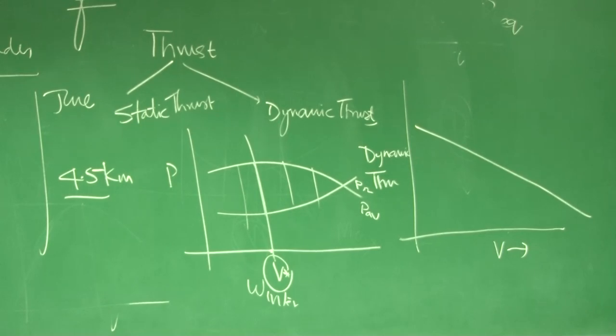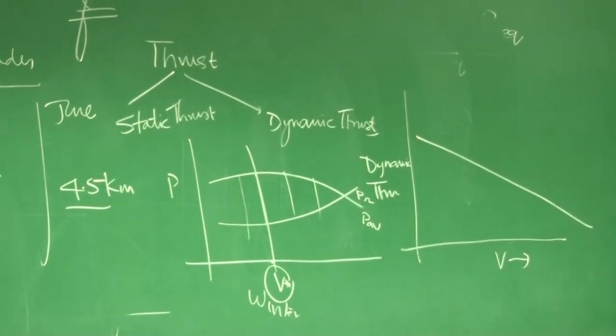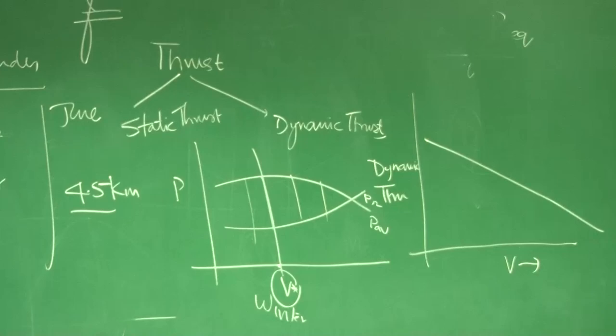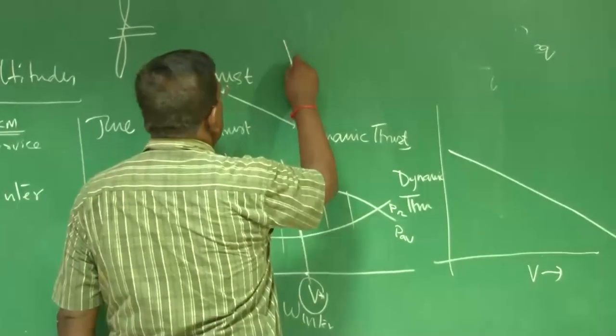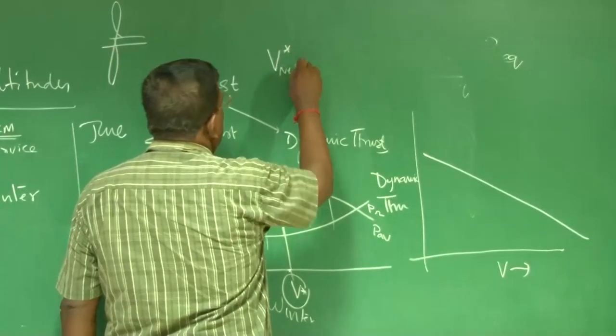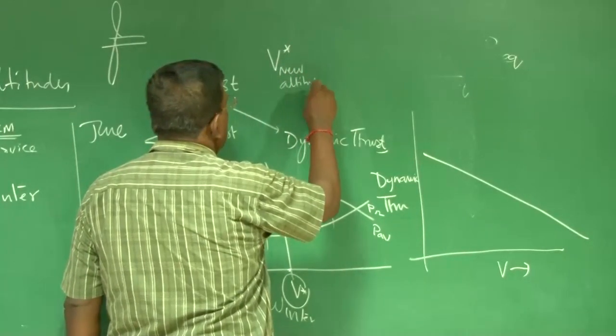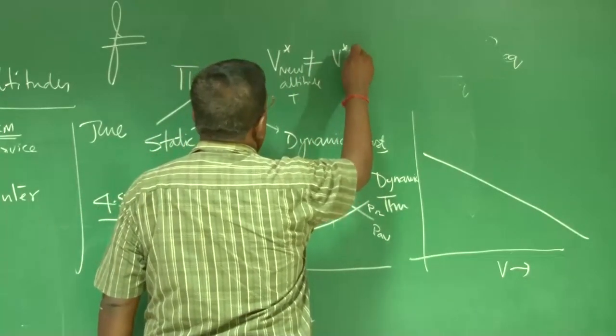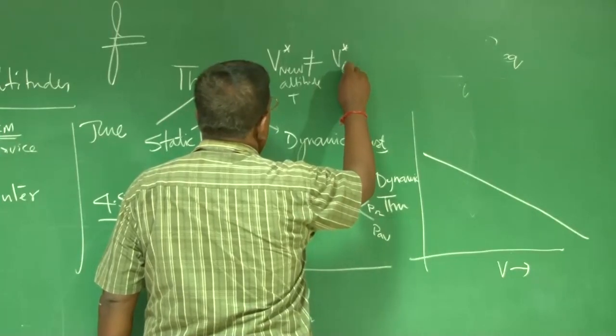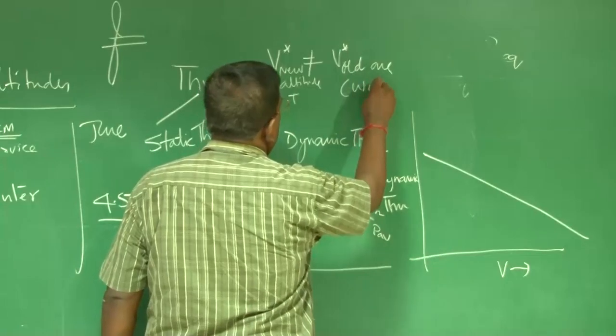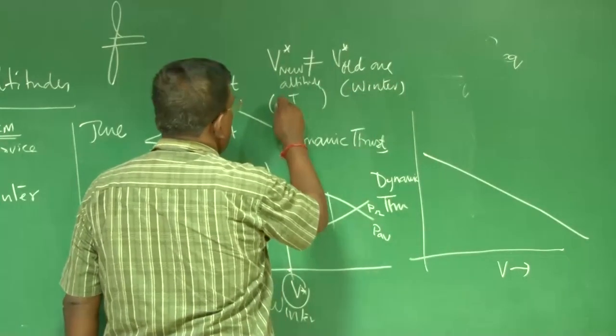As I want to get similar performance of same rate of climb, then what will be the V? Of course, V will be, this V for new altitude or temperature, will not be equal to V star required in the old one. Old one means, here it is winter, here it is summer.